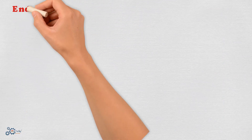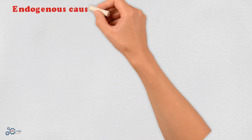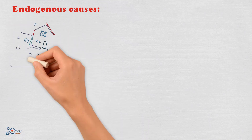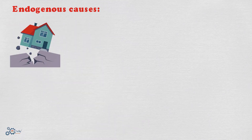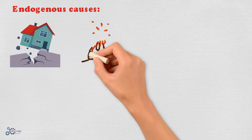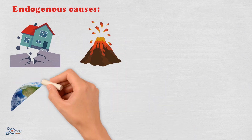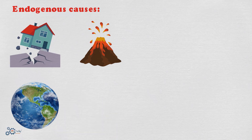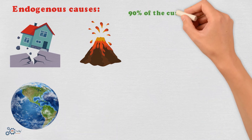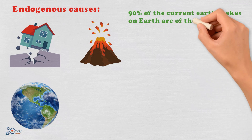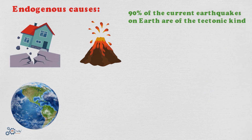The causes of earthquakes usually fall into the following cases: endogenous causes, due to landslides of voids in the Earth's crust, the collapse of underground caves, volcanic eruptions, and movement inside the Earth that accumulates energy in the earthquake-generating area. It is estimated that 90% of current earthquakes on Earth are of the tectonic kind.